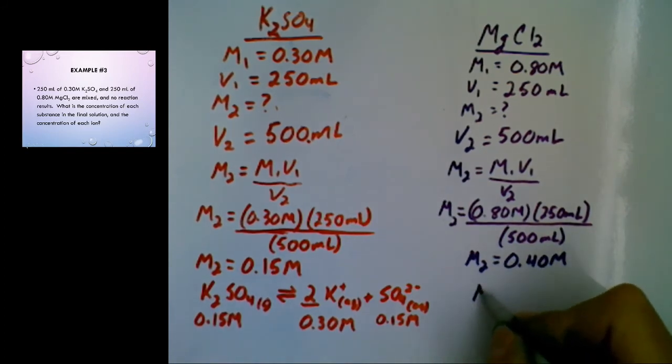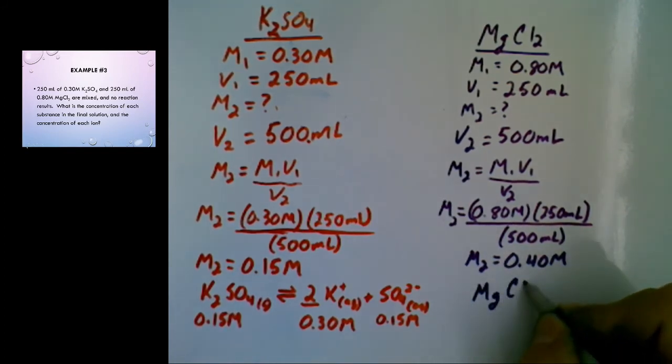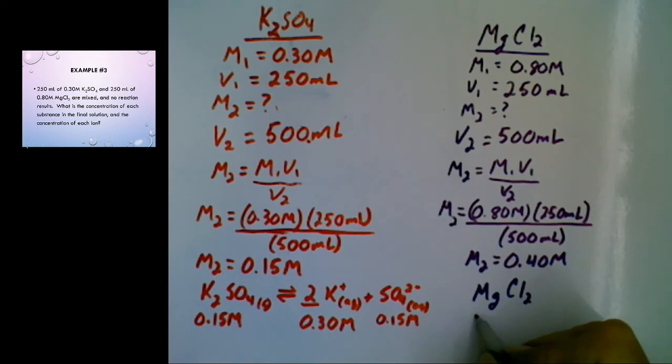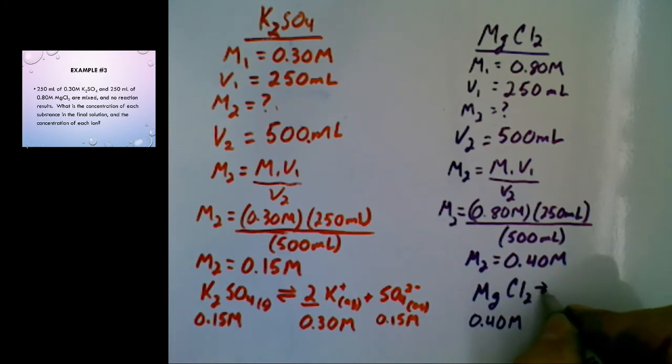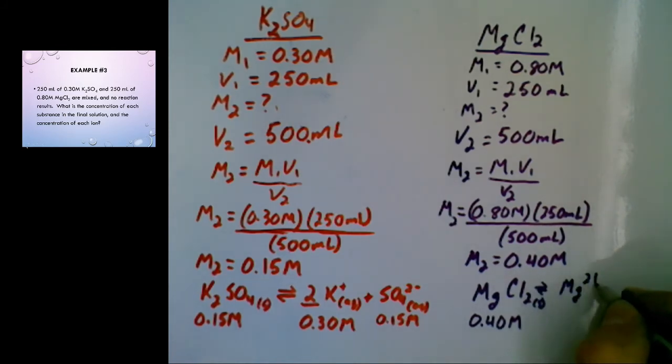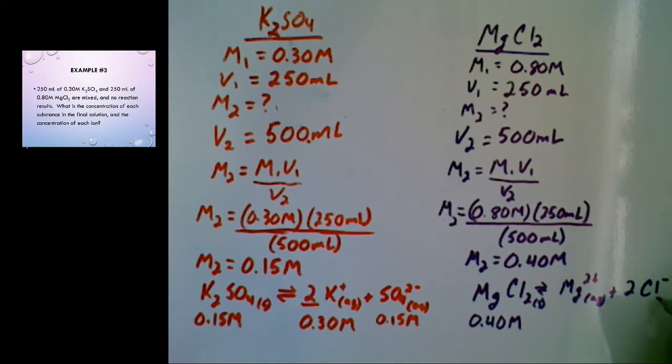Keeping in mind, this had to dissolve. So the concentration of the substance is 0.40 molarity. But, we're going to have a one-to-one ratio with magnesium and a two-to-one ratio with the chloride. So it means we have 0.40 molarity magnesium, 0.80 molarity chloride.